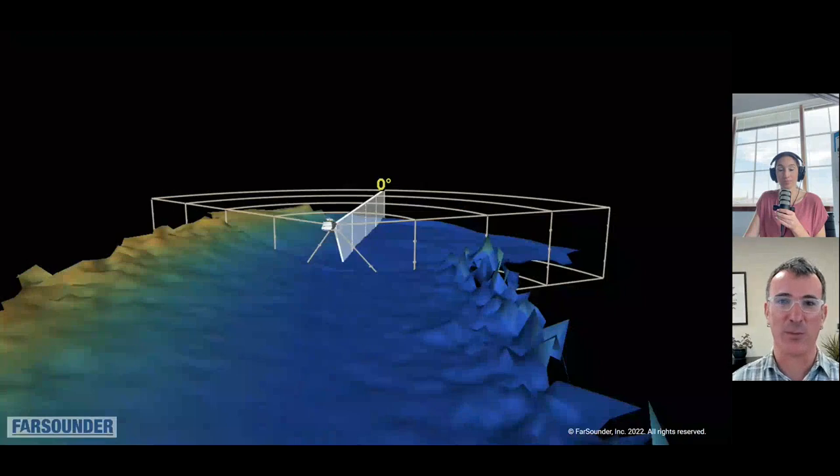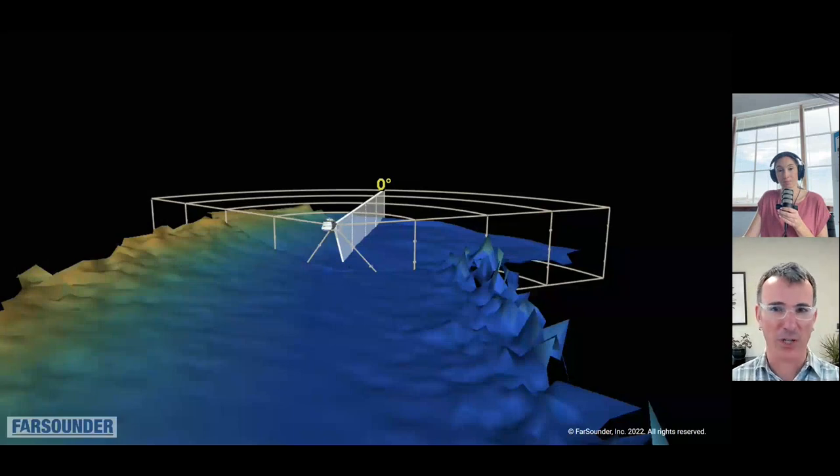Basically, our sonars make a 3D image in front of the vessel. Everything inside the field of view, which is like a pie wedge emanating from the front of the vessel, is real time. But we're also building a map of the depths of everywhere we've been.